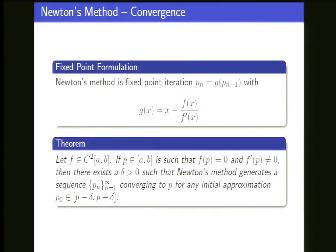In terms of theory, the key thing was to observe that Newton is really fixed point iteration with a particular G of X. We spent a lot of time proving the theorem that Newton converges. However, it's not constructive because it says you have to be close to P within delta, and nobody tells you what delta is. So it's one of those things where at least you know it works for some delta, but it's not practical.